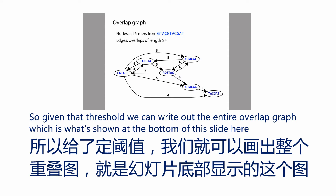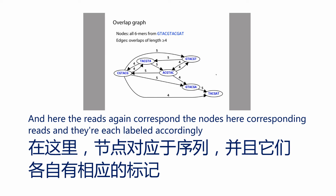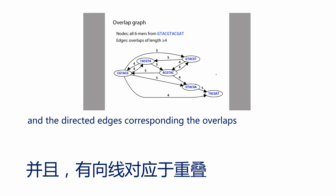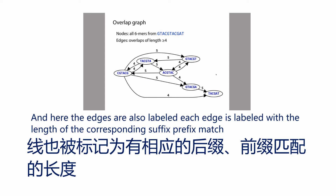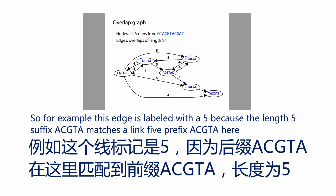Given that threshold, we can write out the entire overlap graph shown at the bottom of this slide. The nodes correspond to reads and are labeled accordingly, and the directed edges correspond to the overlaps. Each edge is also labeled with the length of the corresponding suffix-prefix match. For example, one edge is labeled with a 5 because a length-5 suffix ACGTA matches a length-5 prefix ACGTA of another read.